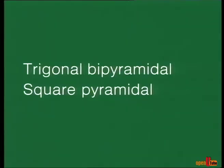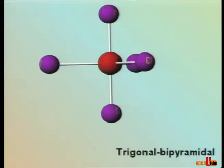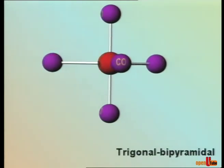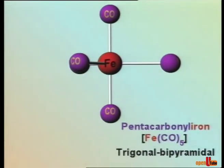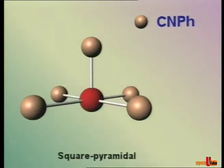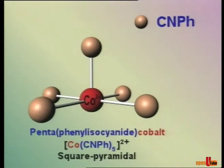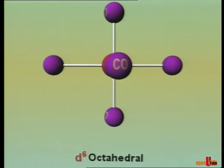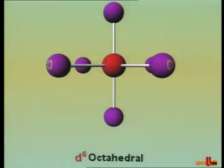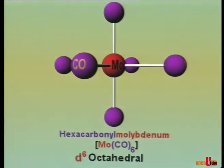Two types of geometries are found for the coordination number 5 as well. They are trigonal bipyramidal and square pyramidal. Compounds with coordination number 6 show an octahedral geometry.